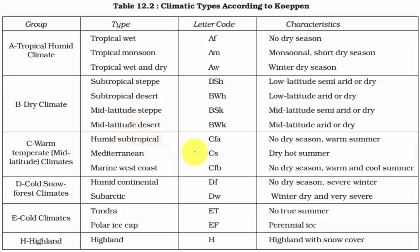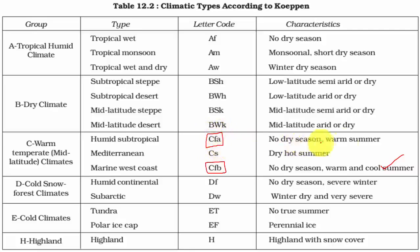Under the Koppen Scheme of Classification, this particular climate is represented by the alphabets C, F, and B, where C stands for temperate type of climate, F for wet type of climate where there is no distinct dry season, and B stands for cool summer. The major difference between the China type (CFA) and the British type is that summers are warmer in the China type and much cooler in the British type.